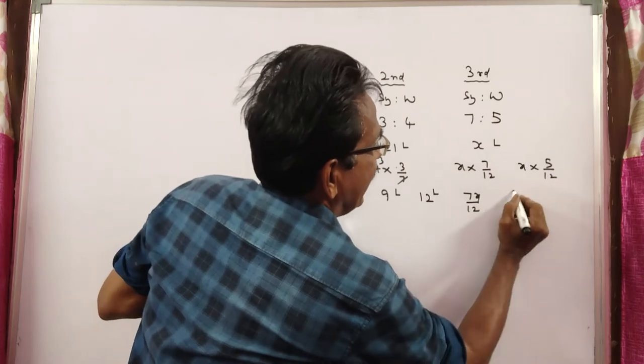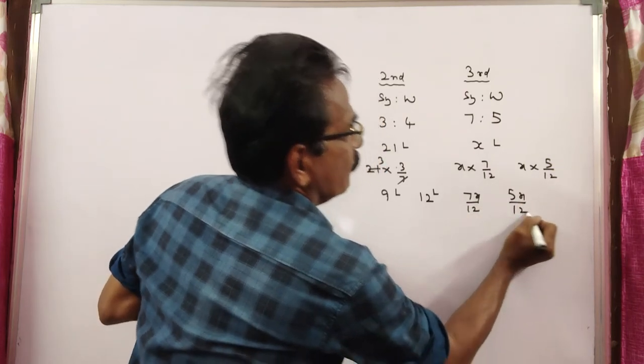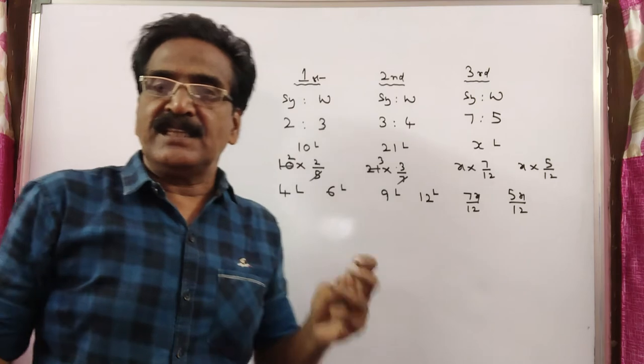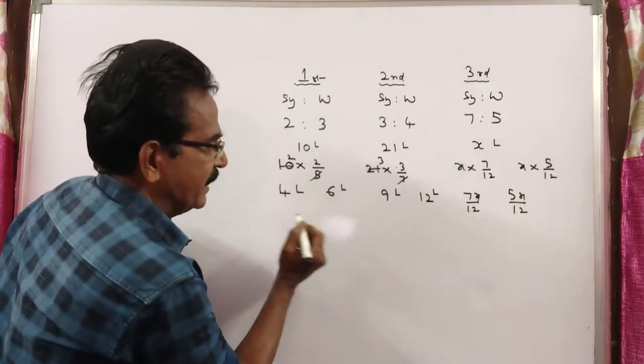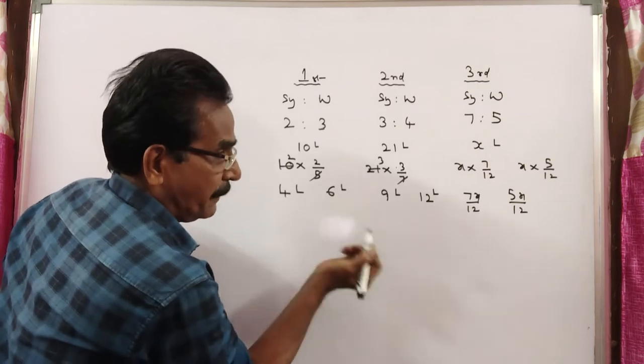That is 7x by 12 and 5x by 12. Now it is said, in the final mixture, syrup and water must be equal. So let us make equal syrup and water.